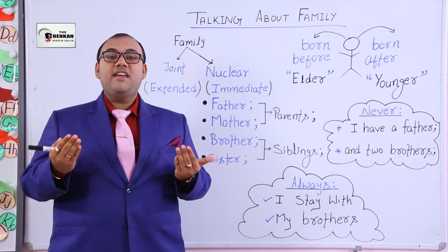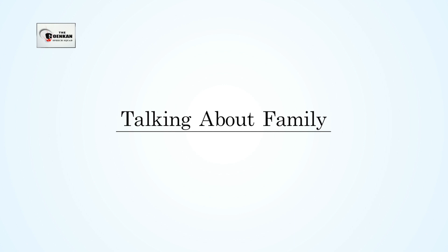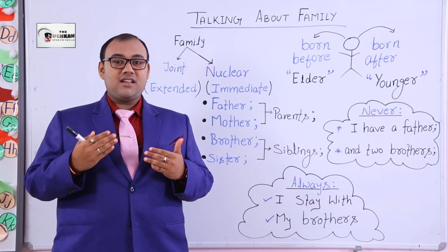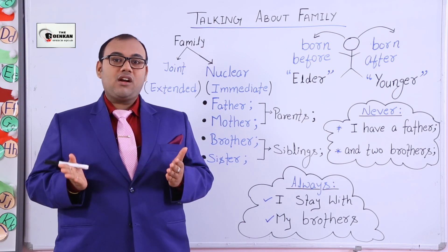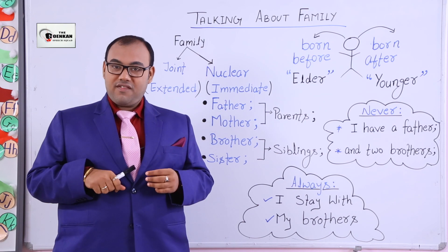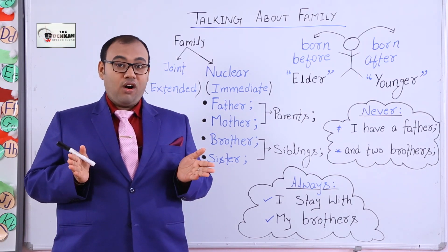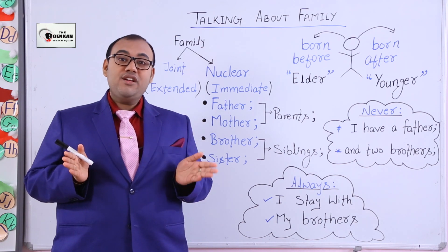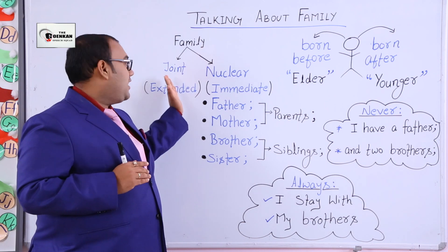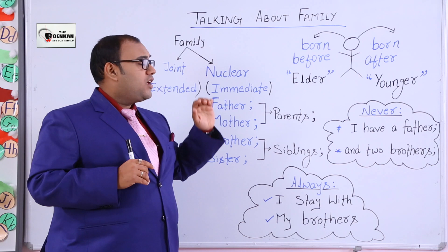Now, talking about family, before starting we need to know what are the types of family. Basically there are two types of family: extended family and immediate family, or joint family and nuclear family. You can see on the whiteboard I have bifurcated family into two types: extended family and immediate family.